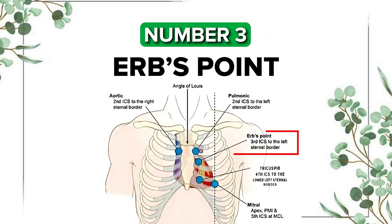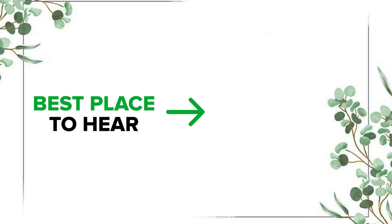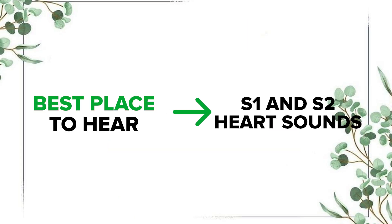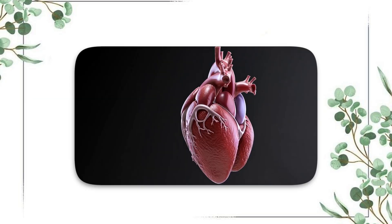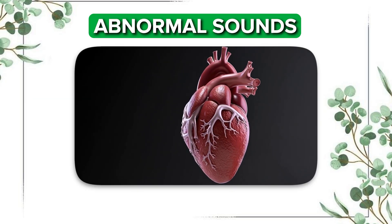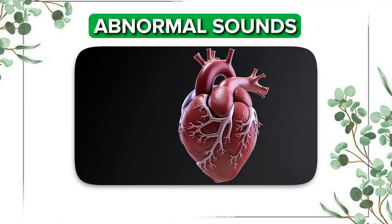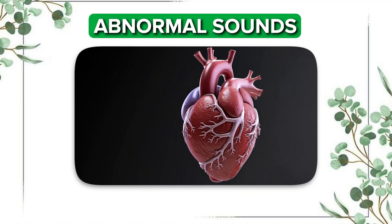The third point is Erb's point, located at the third left intercostal space, left sternal border. This is a general listening point for heart sounds and the best place to hear both S1 and S2. An abnormal finding here is early diastolic murmurs, which may also be heard at this location.